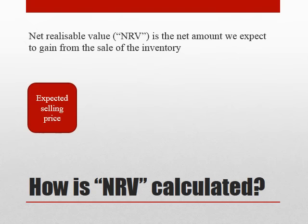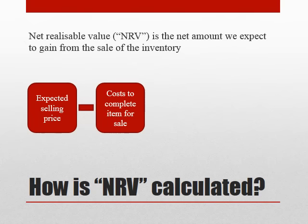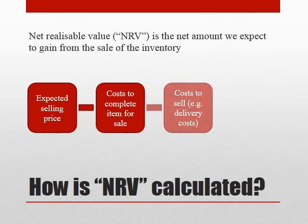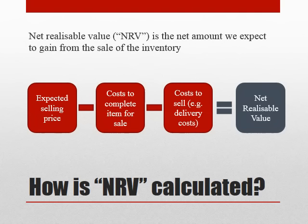We would start off by considering the amount we expect to sell it for, and then we would deduct any costs required for the item to be completed so that it could then be sold, less any costs associated with that sale — for instance delivery costs or perhaps commission costs. So we start with selling price and then deduct any amounts that we would have to incur in the future in order to achieve that selling price. That gives us our net realizable value.